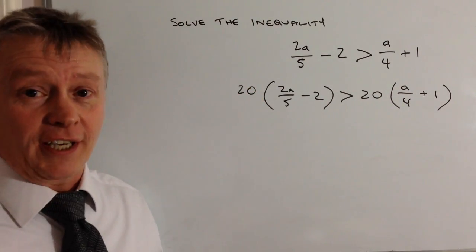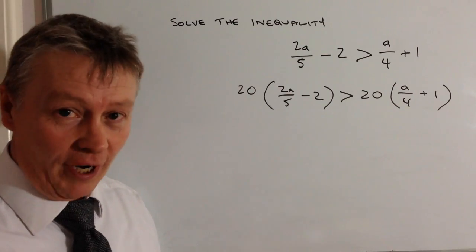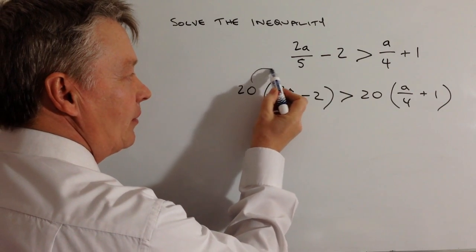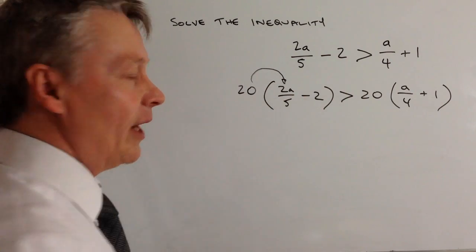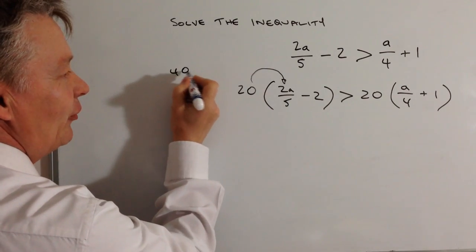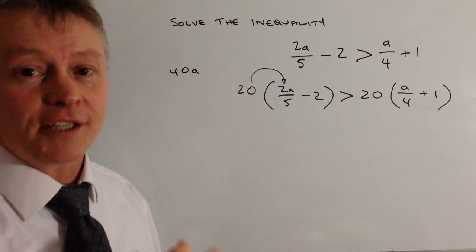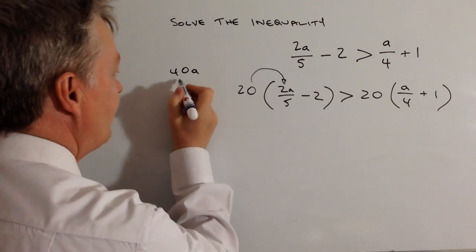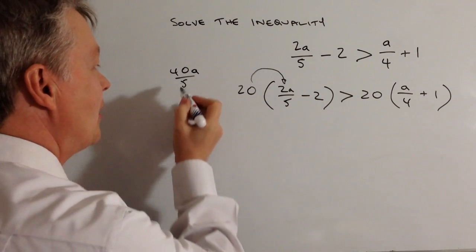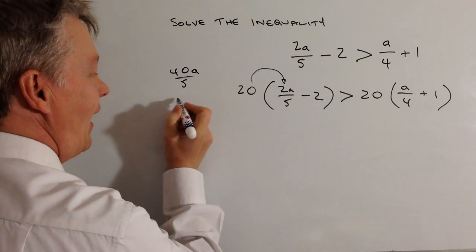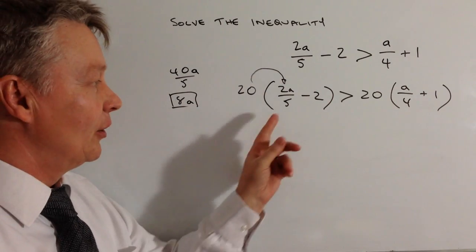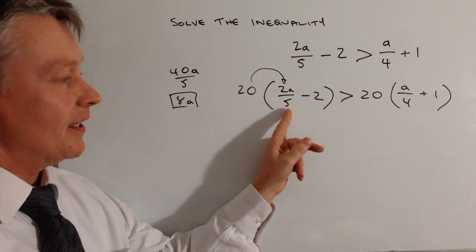Then it's a case of multiplying out the brackets. If I multiply 20 times 2a/5, I get 40a/5, which simplifies to 8a since 40 divided by 5 is 8. That's brilliant because it means I lose the denominator.